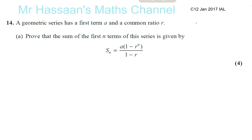So question number 14, part A. We're asked to prove that the sum of the first n terms of a geometric series, which has a first term A and a common ratio R, is given by this formula.